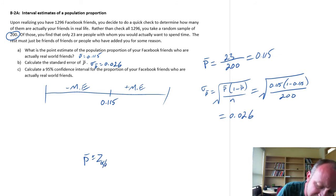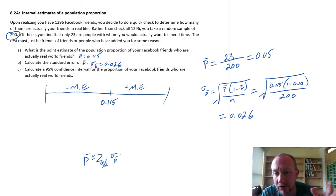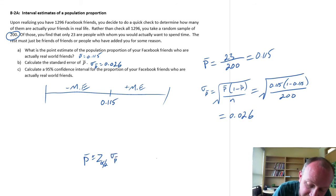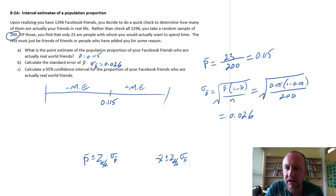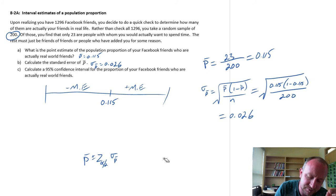We're using the Z distribution because we're approximating this binomial distribution with Z, with the standard normal distribution. So this is Z times the standard error. So it's the same, right? When we're looking at means, this is X bar plus or minus some critical value times the standard error of X bar. So we've seen these formulas before. Hopefully it's nothing too alien for us.